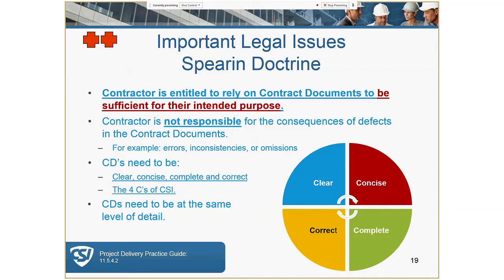The Spearin Doctrine comes from an old case that basically says the contractor is not responsible for the consequences of defects in the contract documents. The contractor is entitled to rely upon the drawings and specifications for their intended purpose. The four Cs of the CSI world — clear, concise, correct, and complete — I suggest you commit them to memory, not just for the test, but for your practice every day. Every drawing, every set of drawings, every spec — keep those four Cs in mind.